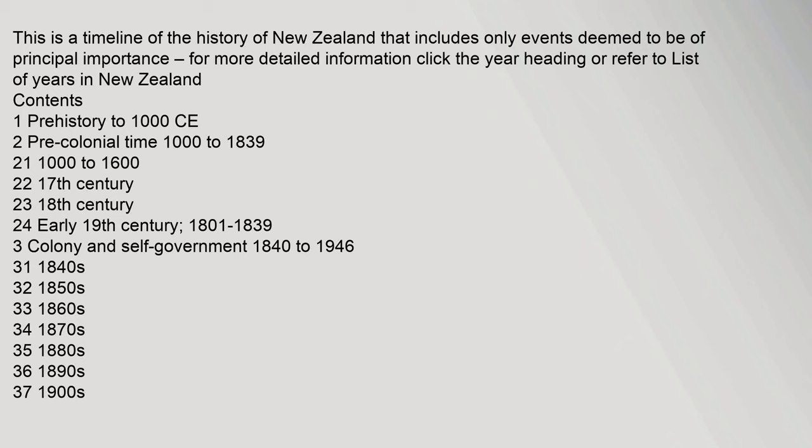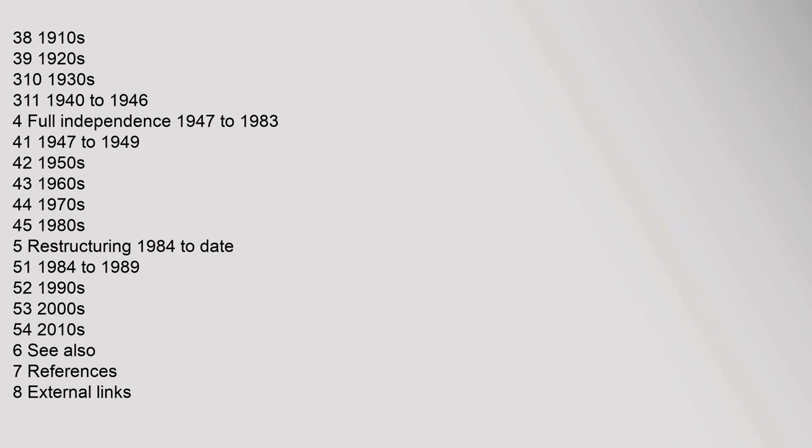Contents: 1. Prehistory to 1000 CE; 2. Pre-colonial time 1000 to 1839, including 1000 to 1622, 17th century, 18th century, and early 19th century 1801–1839; 3. Colony and self-government 1840–1946, covering the 1840s through 1940–1946; 4. Full independence 1947–1983; 5. Restructuring 1984 to date; 6. See also; 7. References; 8. External links.